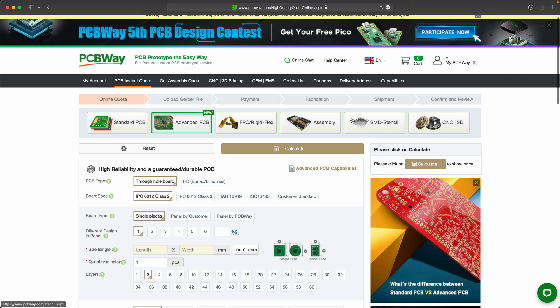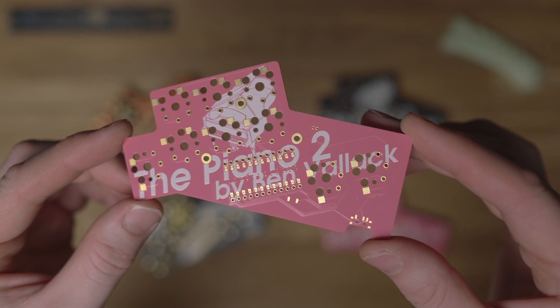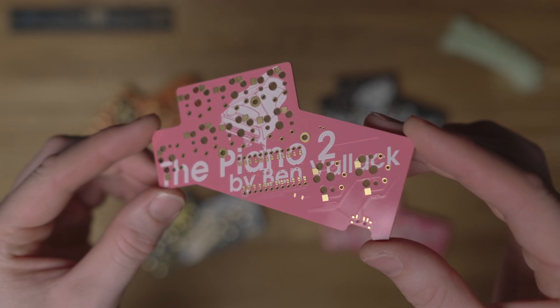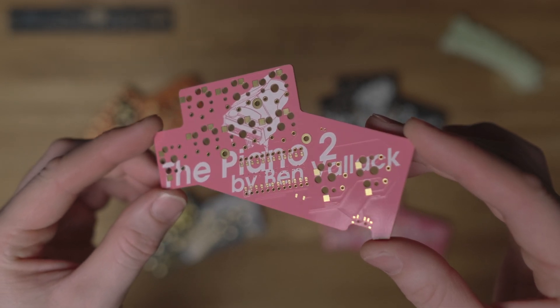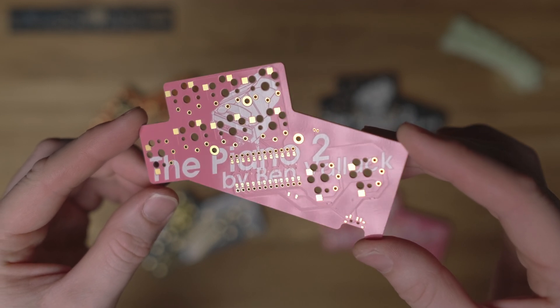I was using PCBWay before they started sponsoring these videos. I've no problem recommending the service they provide. I've never had any technical issues. They're super affordable and very fast as well, with fast shipping and fast turnaround times. This is the pink solder mask layer, and I think this is the color people tend to think of when they think of these rarer advanced colors. It looks great with the white silkscreen.